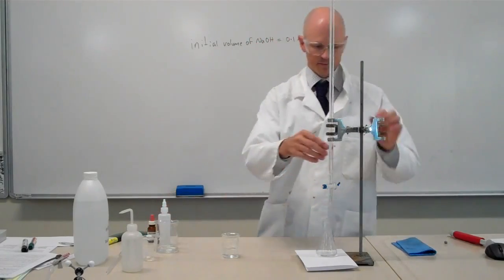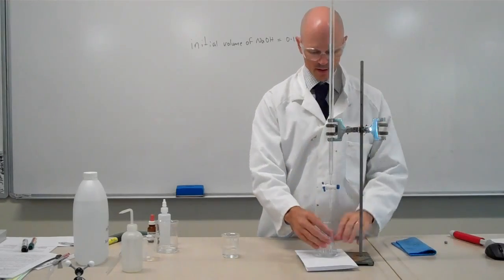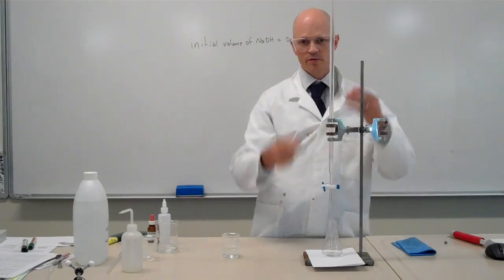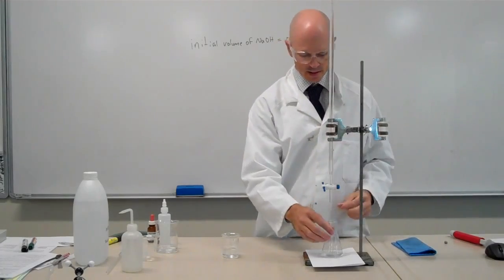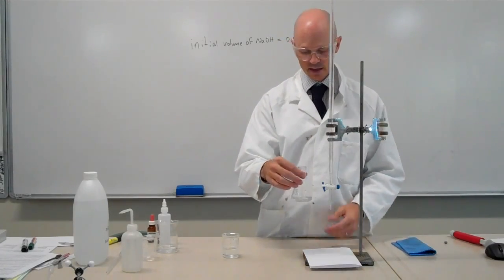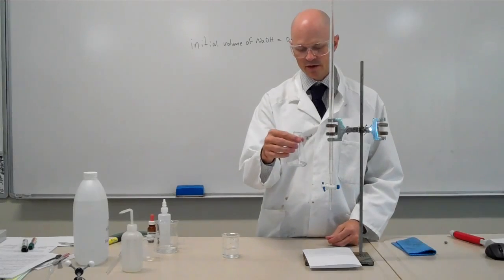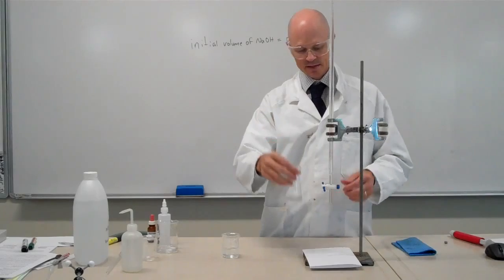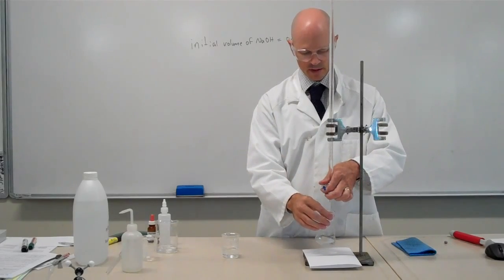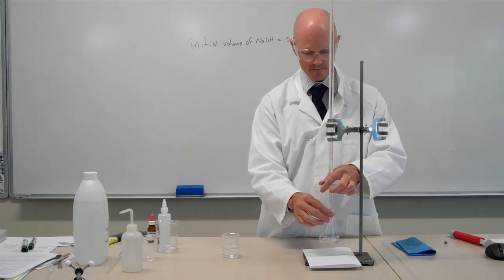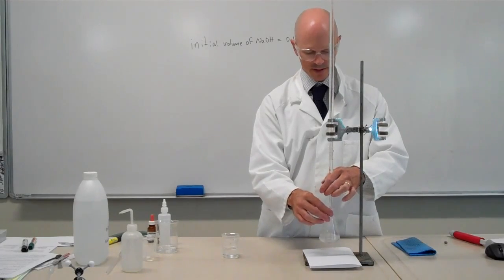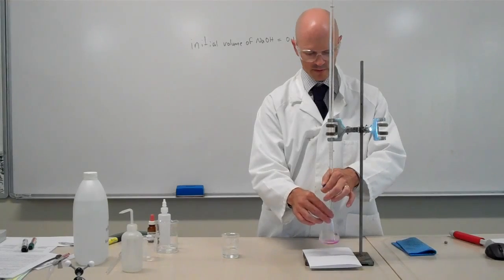The process now is to add the sodium hydroxide from the burette into the flask containing my vinegar until we have a colour change. Phenolphthalein changes from clear to pink when it goes from acid to base. So I'm just adding my sodium hydroxide by opening up the tap and just twirling around.